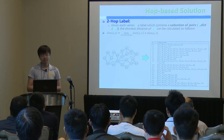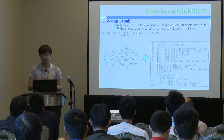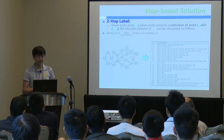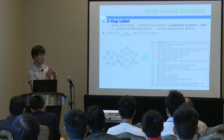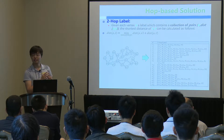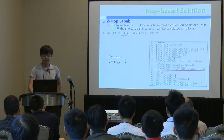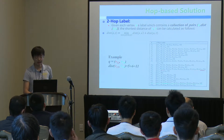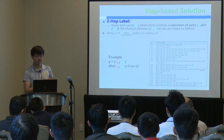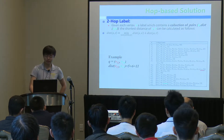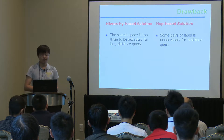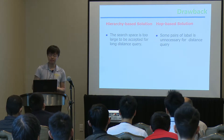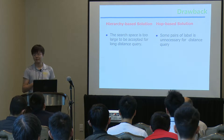The other solution is the hop-based solution. In hop-based solution, we give each vertex a label which contains distances. In query processing, we select the two labels and join them to find the common vertex. For V12 and V19, we find the common vertex V14 and add the values to get the result. However, in the hierarchy-based solution, the search space is too large for long-distance queries. In the hop-based solution, some label pairs are unnecessary, especially for short queries.